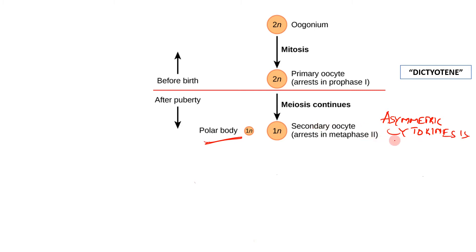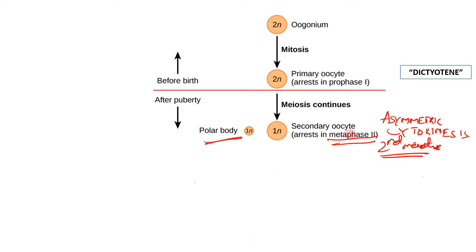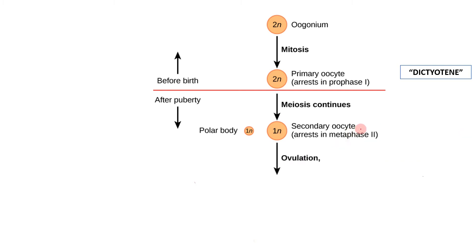Asymmetric cytokinesis results in the formation of one polar body and one secondary oocyte. The secondary oocyte then arrests again — this time in metaphase two. This is the second meiotic arrest. So there are two meiotic arrests: the first occurs in meiosis one (at diplotene/dicteotene), and the second occurs in meiosis two (at metaphase two).